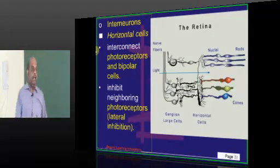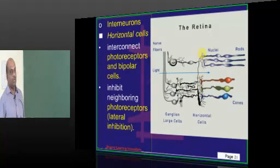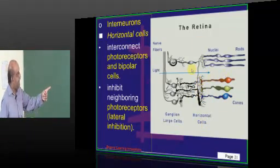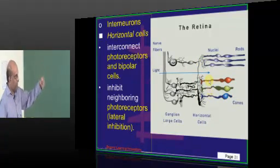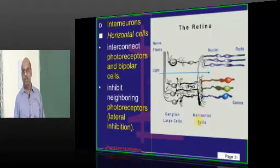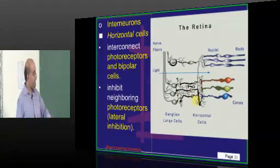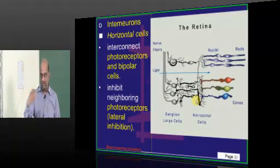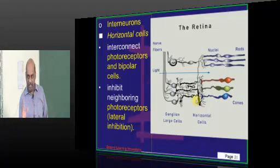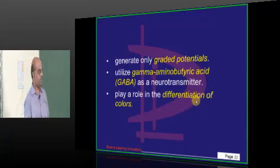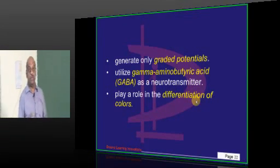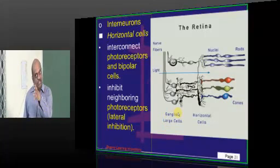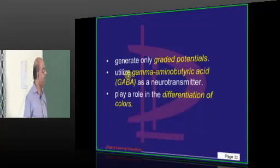Ganglion cells also use glutamate as the neurotransmitter. In the retina, we have interneurons. One type of interneurons are called horizontal cells. What do they do? They interconnect the photoreceptors with each other and also the bipolar cells. They basically cause inhibition of the neighboring photoreceptors - that's called the phenomenon of lateral inhibition, so that there is a sharpening of visual focus. Credit goes to these interneurons called horizontal cells, which are inhibitory interneurons. Horizontal cells produce graded potentials, use GABA as a neurotransmitter, and are very important in the differentiation of colors. Credit goes to the lateral inhibition created by the horizontal cells.